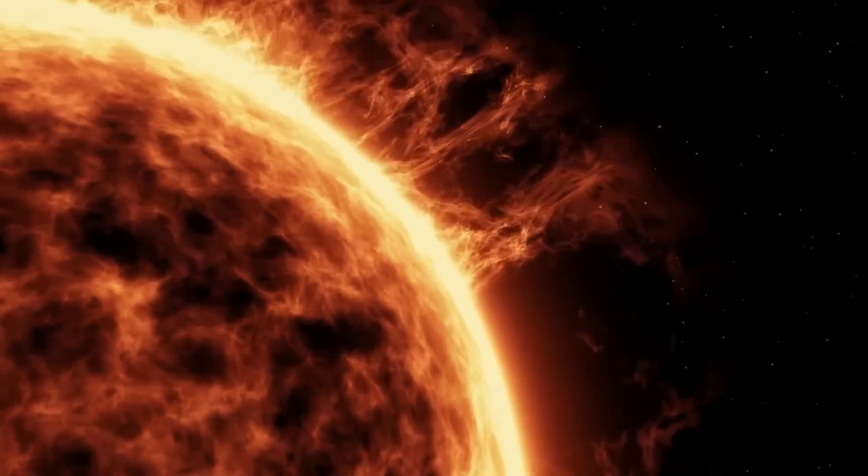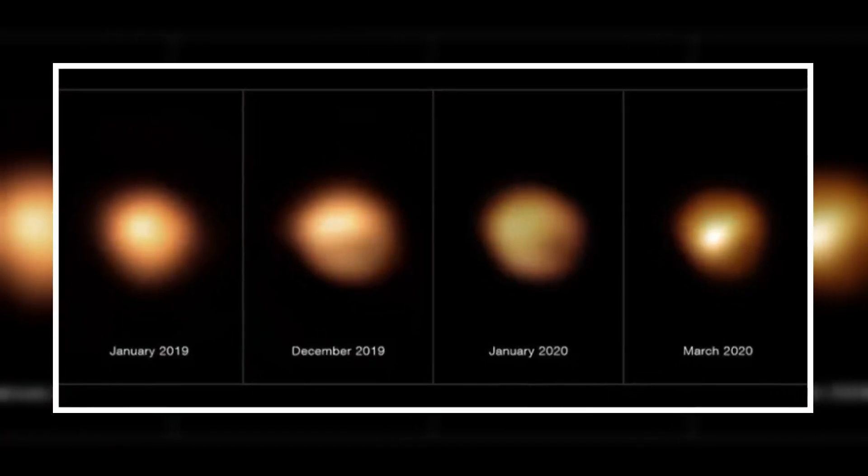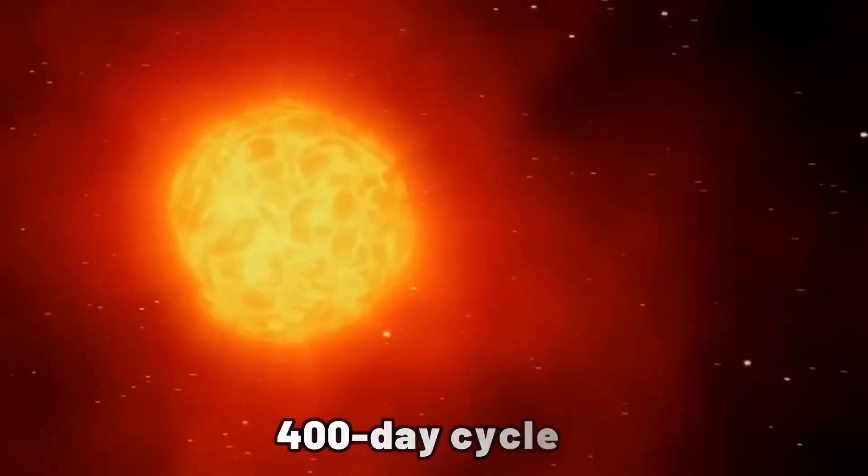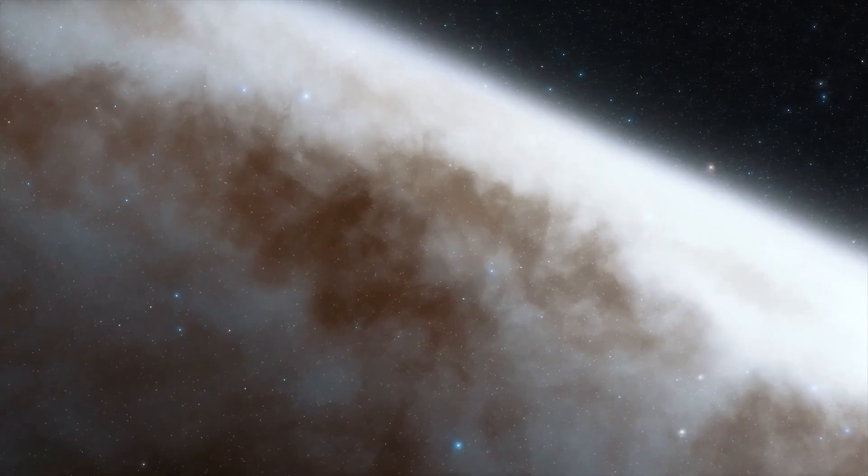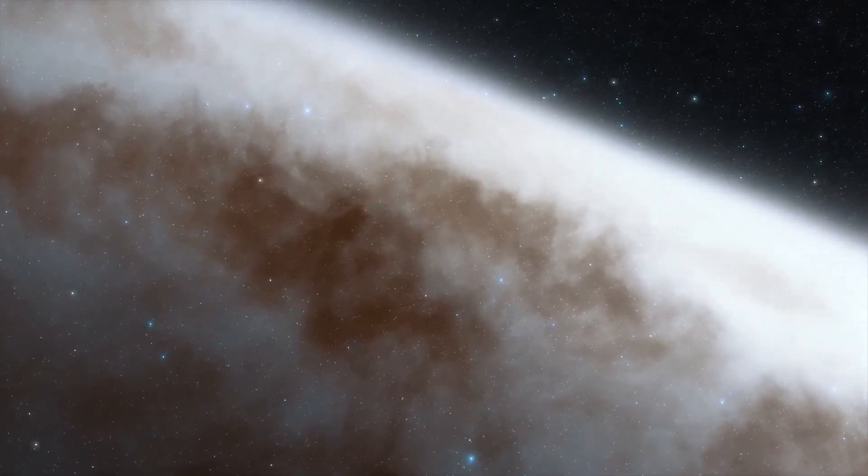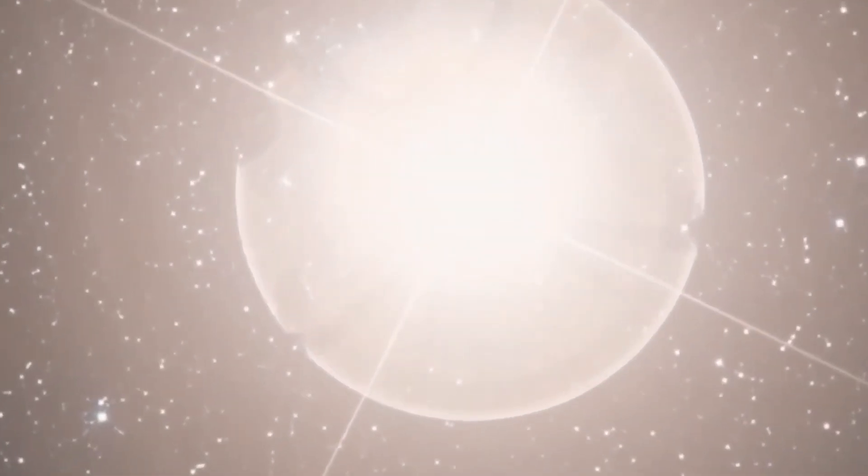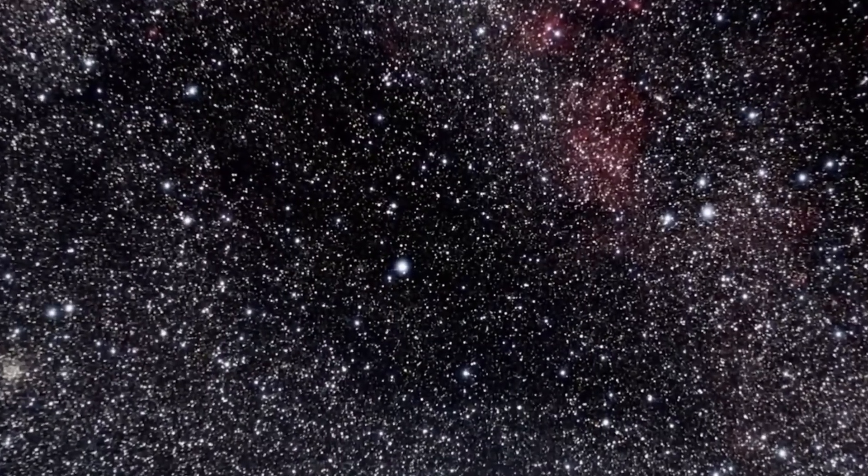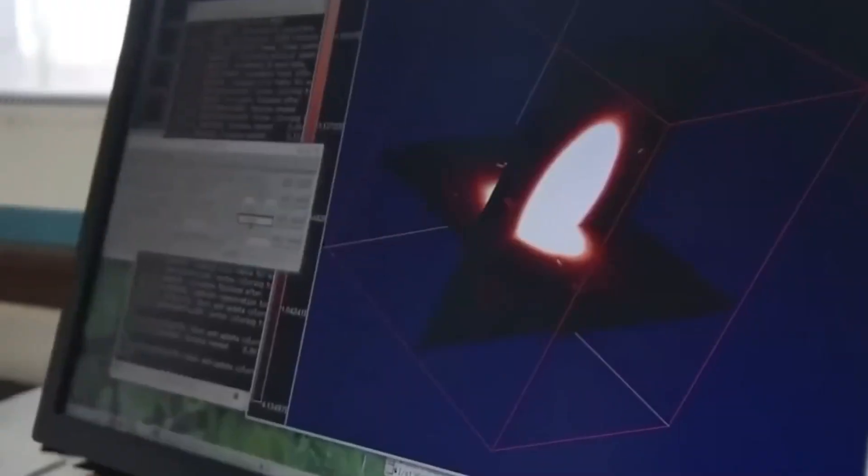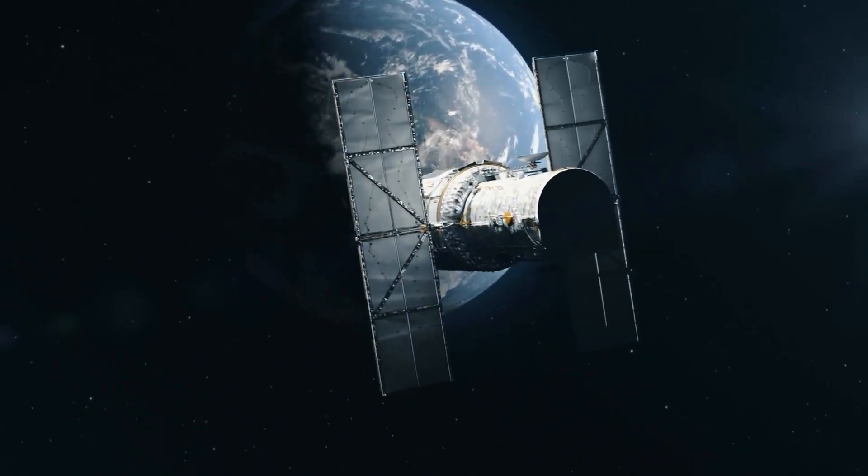According to our current state of knowledge, however, the red supergiant will only bid farewell to the cosmic stage in the distant future. It only reached its final stage comparatively recently. The final supernova is likely to be a good 1.5 million years away. However, other researchers have set a much tighter time frame and estimate that Betelgeuse will disappear from the space maps within the next 100,000 years.